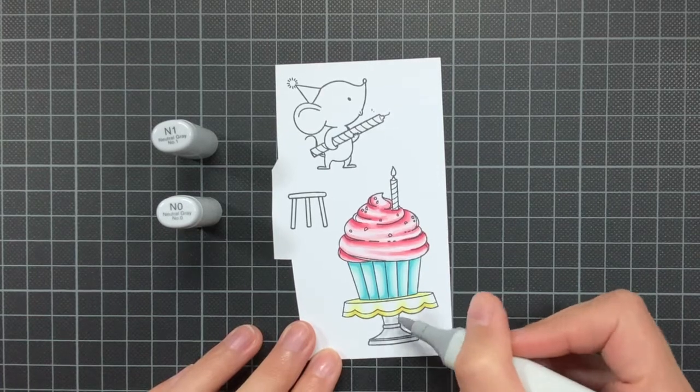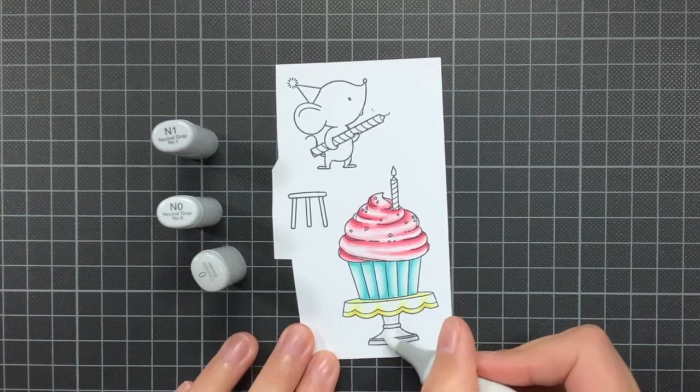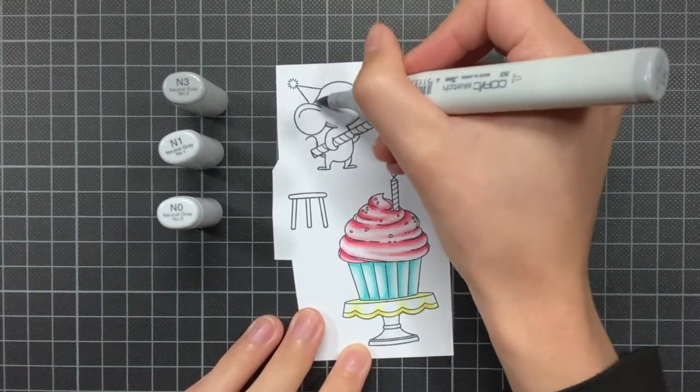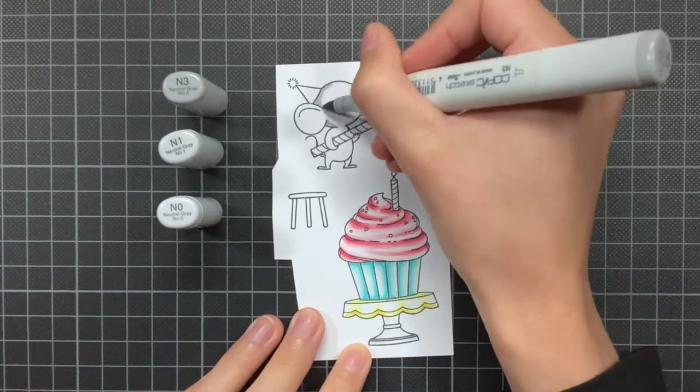After the coloring we will start working on the shaker part, but for now for the rest of the coloring I will put up some music so you can enjoy the music and watch me color. Enjoy!